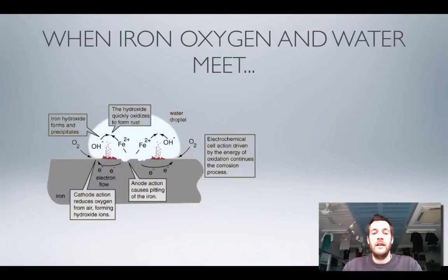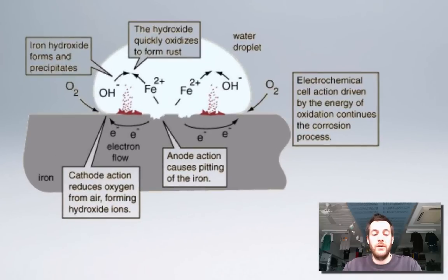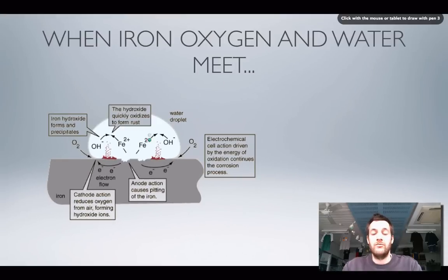Let's have a look at what happens when iron rusts. Here's a diagram showing what's taking place. This big white blob that you can see here is supposed to be a droplet of water sitting on the surface of this grey iron.